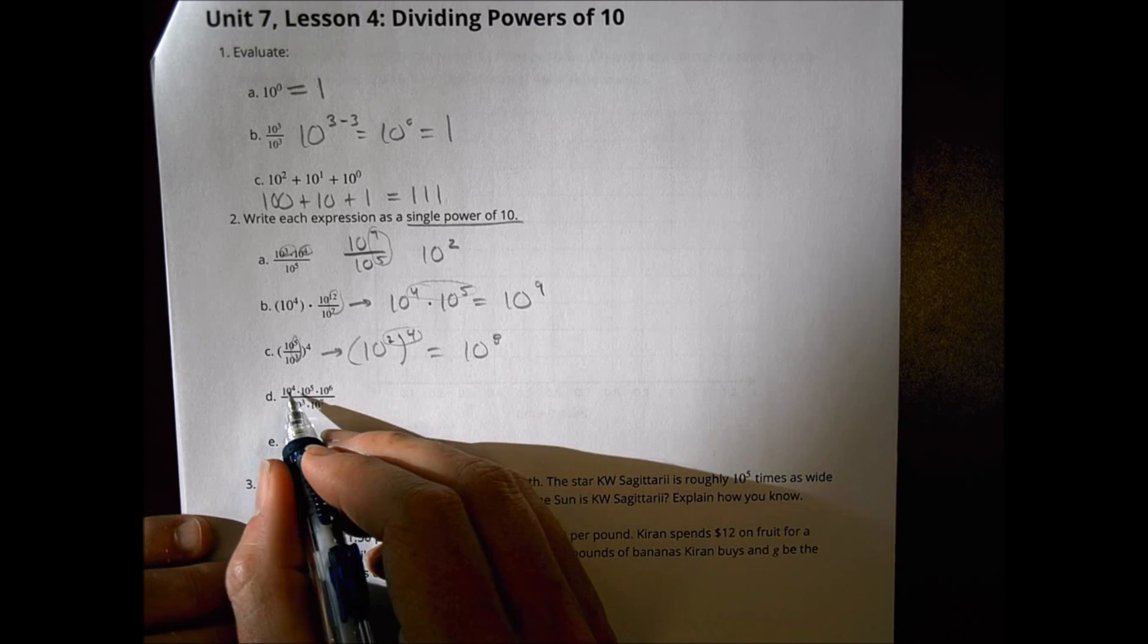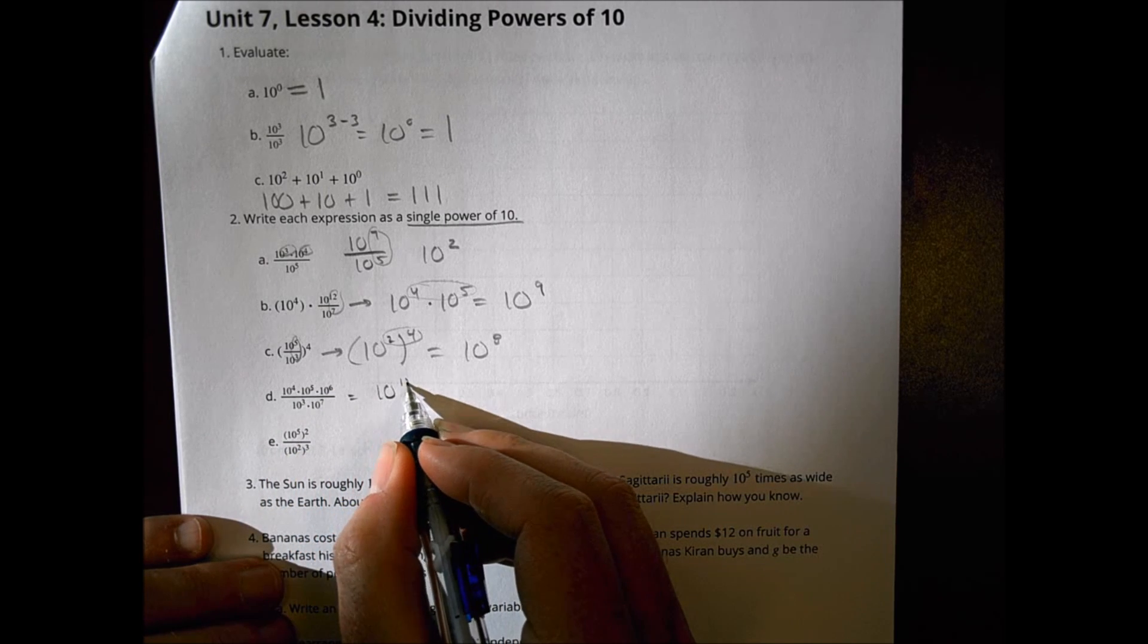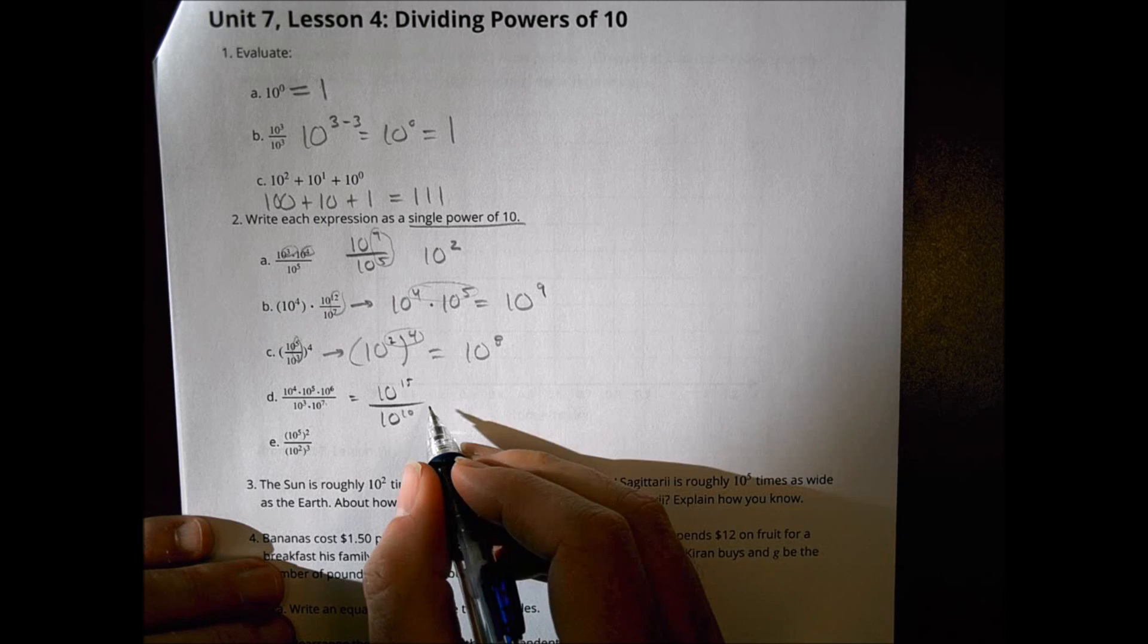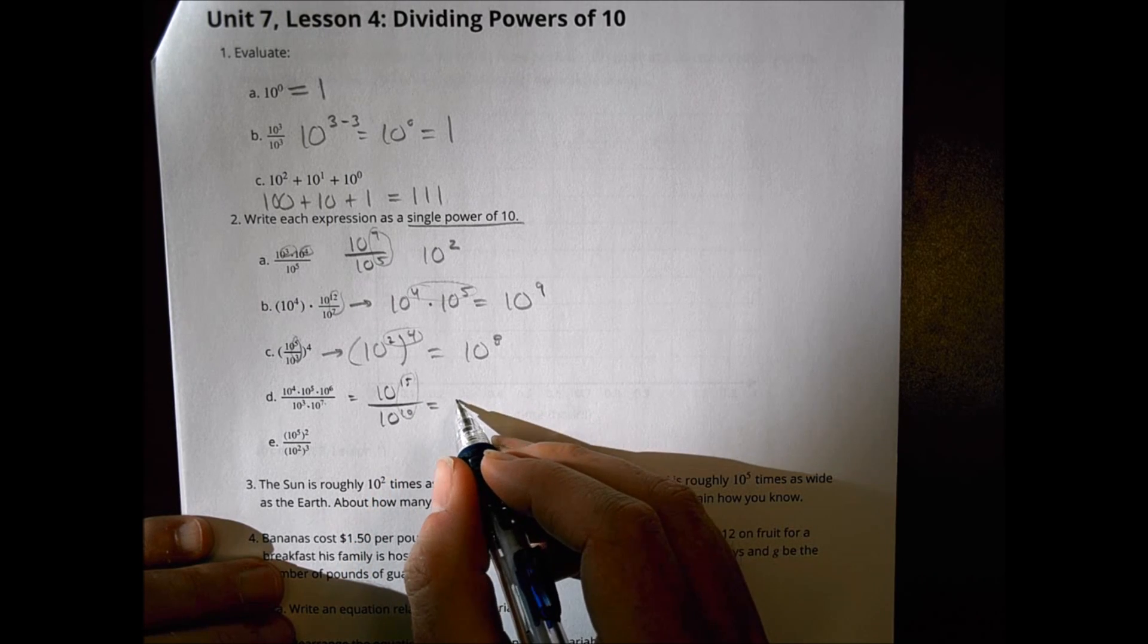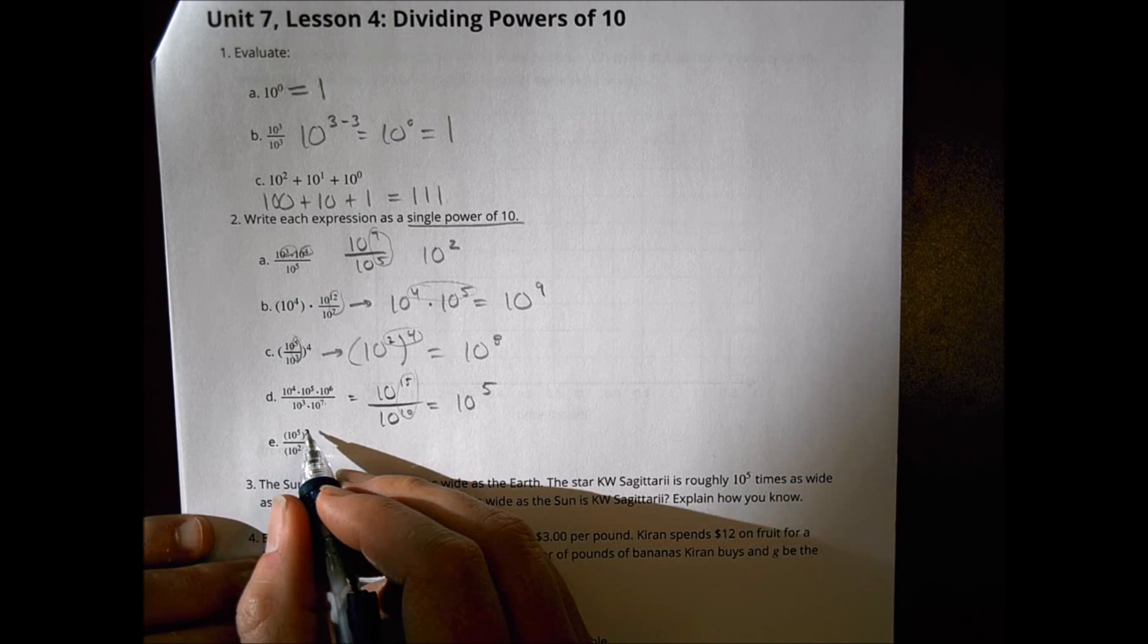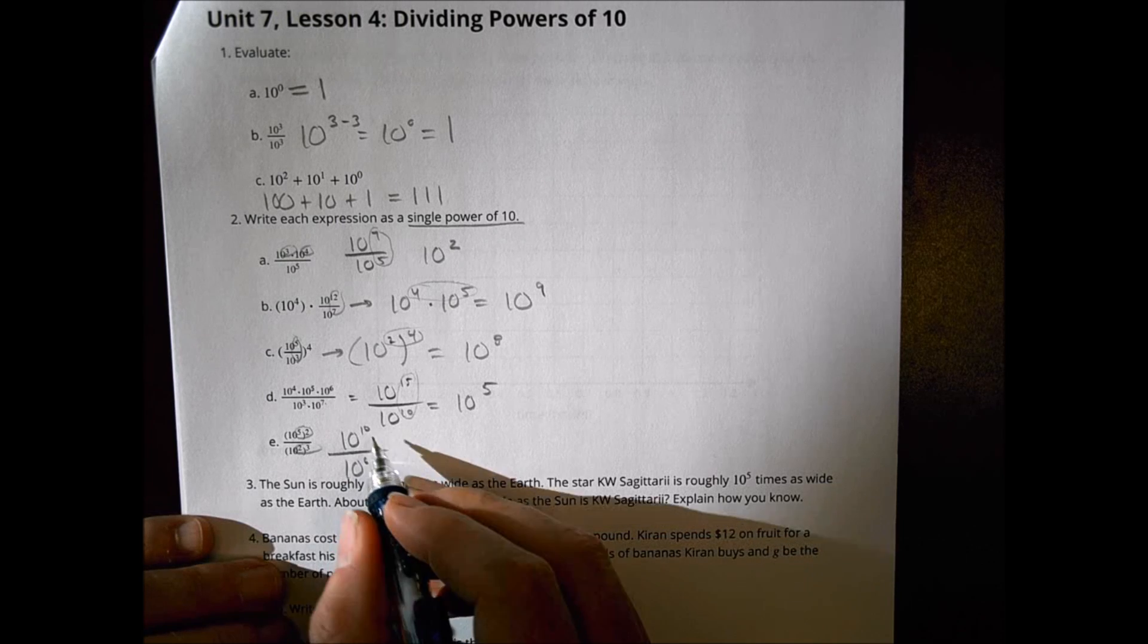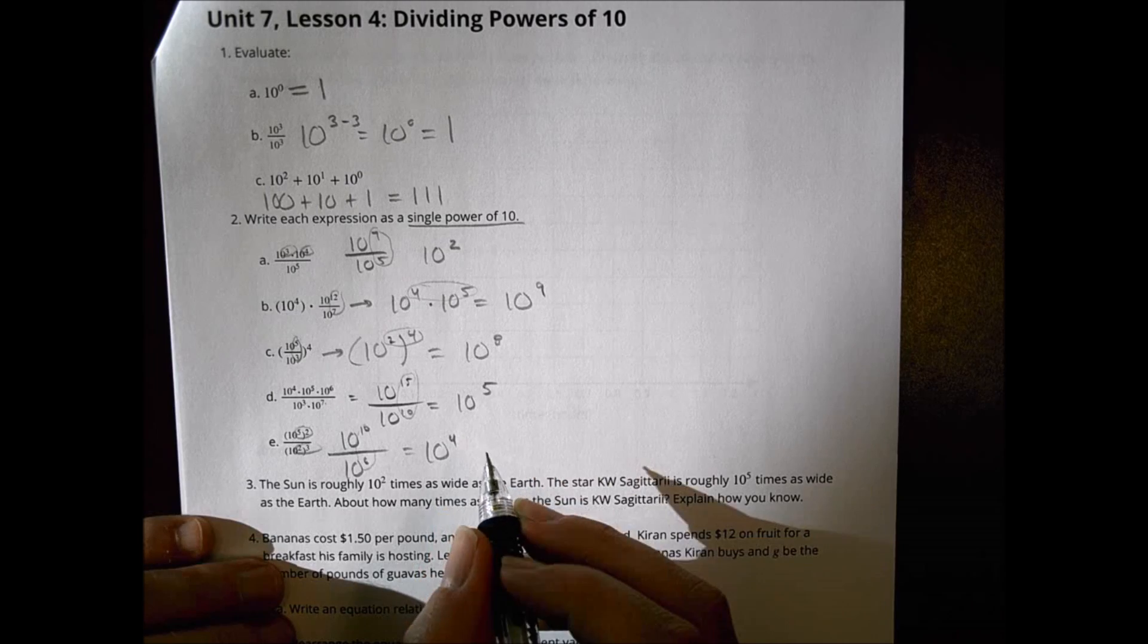Up here, let's take the top part. Four plus five is nine. Plus six is fifteen. So ten to the fifteenth power. And down here I have ten to the three times seven. Three plus seven is ten. So ten to the tenth power. We're going to subtract this. Fifteen minus ten is five. So we're going to put ten to the fifth power right there. And over here, we can go ahead and multiply it out first. Five times two is ten. So this is ten to the tenth power. And two times three is six. So ten to the sixth power. Ten minus six is four. So we'd say ten to the fourth power right there.